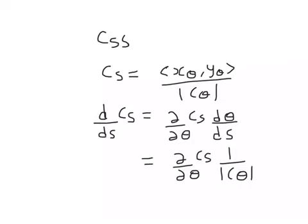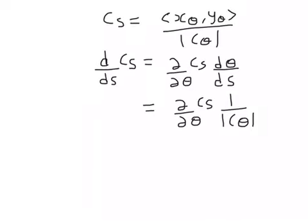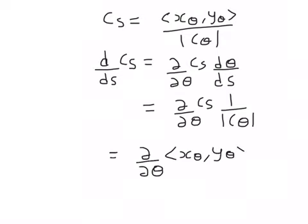To find the partial of c_s with respect to θ, I'll compute d/dθ of (x_θ, y_θ) divided by the square root of x_θ² + y_θ². There are two components — the i component and the j component.